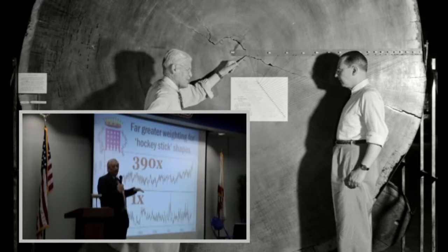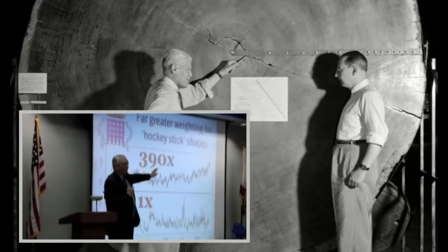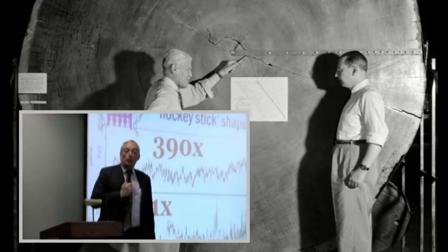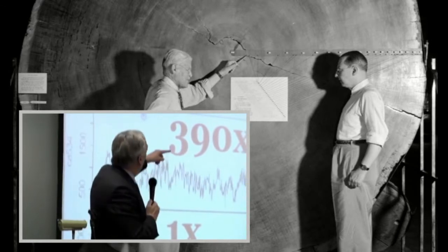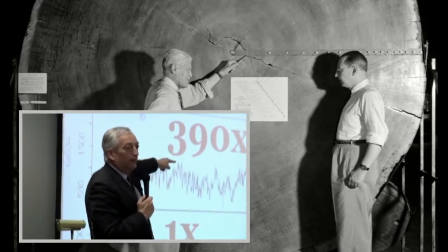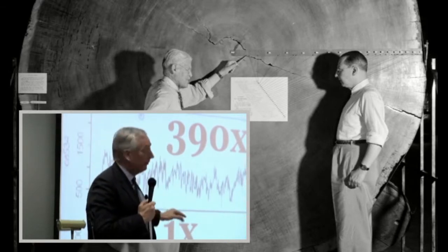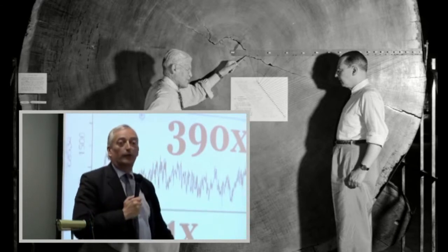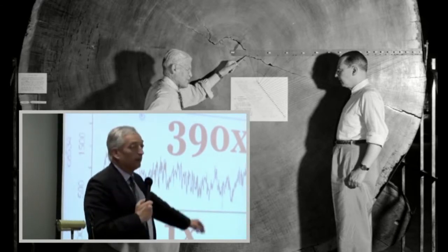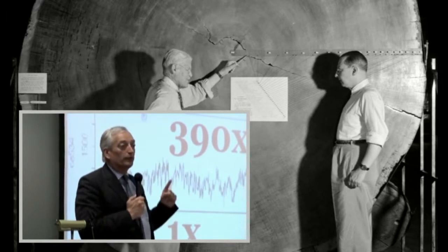And then they took different trees, several hundred of them, and all the trees that gave them that long shank and then the uptick at the far end, which is what they wanted to do because they wanted, remember, to abolish the medieval warm period. They gave those 390 times as much weighting in the program that calculated that final graph than they did the one at the bottom here from Mabry Slough in California, which shows no particular trend at all, nothing surprising happening in the 20th century. So that was the first trick.